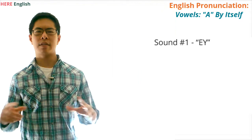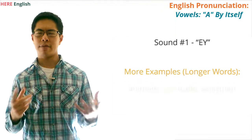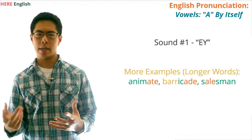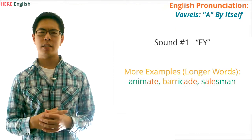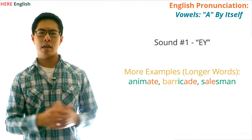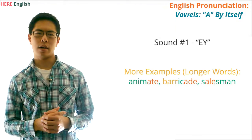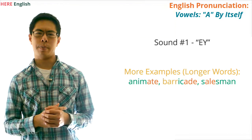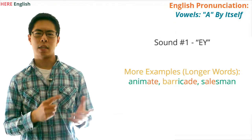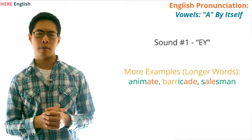Some examples of longer words where the vowel A sounds like A that have these rules are animate, barricade, and salesman. In each of these words, notice that one of the A's sounds like A because it is followed by a consonant and then by the letter E. Also, in the word barricade, notice that the first A has one consonant before it and two R's after it, which is our second rule.